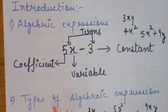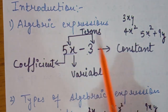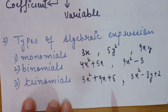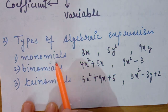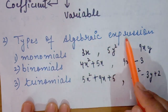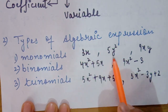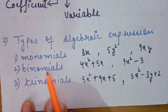Now the next topic is types of algebraic expressions. We have two types: one on the basis of terms, and one on the basis of degree, which I will explain later. First, types on the basis of terms. The first type is monomial — monomials are those algebraic expressions in which we have only one term, like 3x, 5y squared, or 9xy.